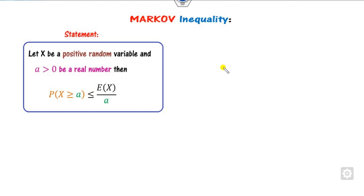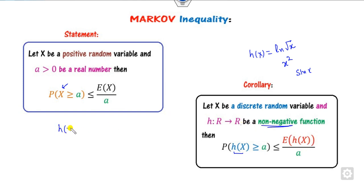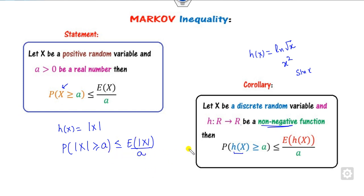When solving problems, identify A and the expected value E[X]. Additionally, instead of X, if you write any non-negative function H(X) — such as log(√X), X², or sin(X) — you can apply Markov inequality provided H is a non-negative function. For example, if H(X) = |X|, then the Markov inequality reduces to the Chebyshev inequality. This can be written as the Chebyshev inequality about the origin.